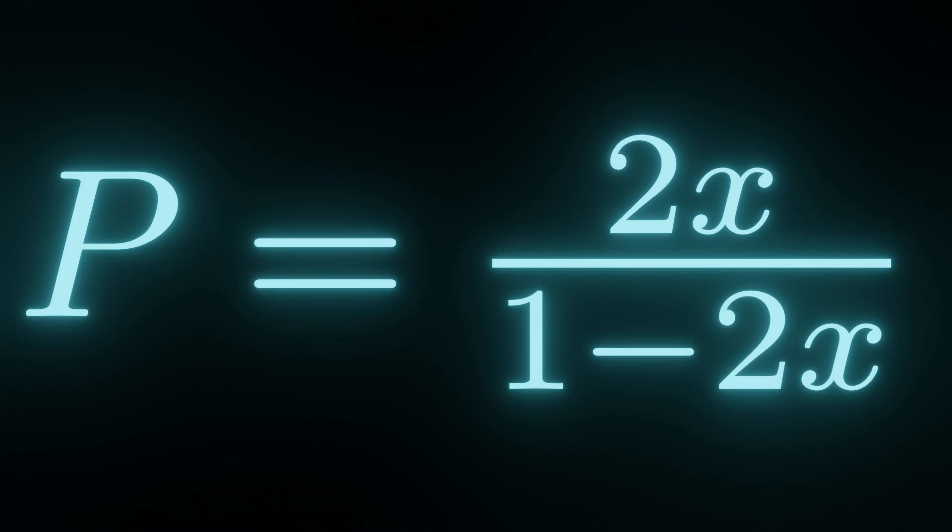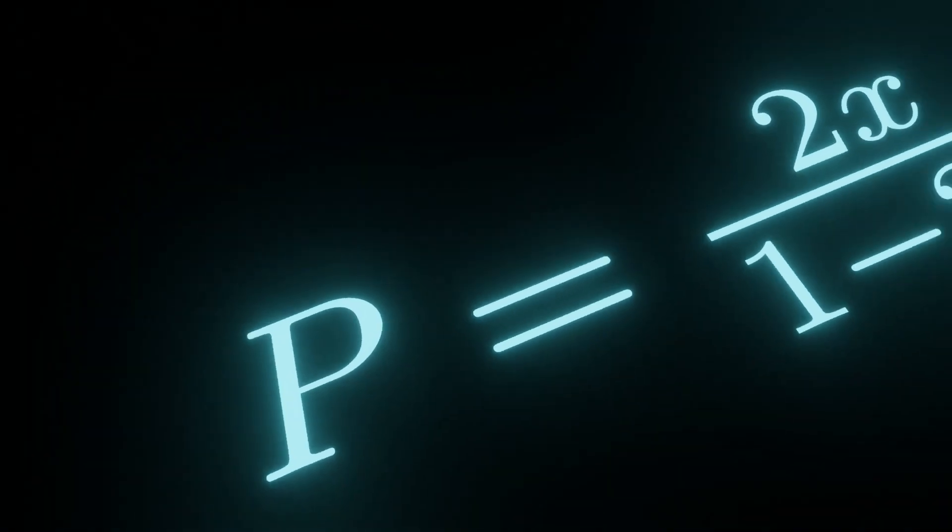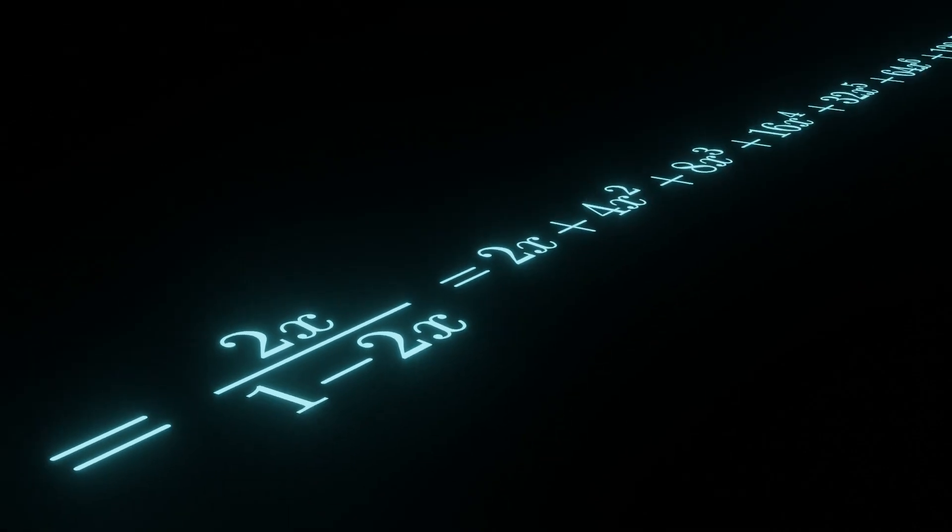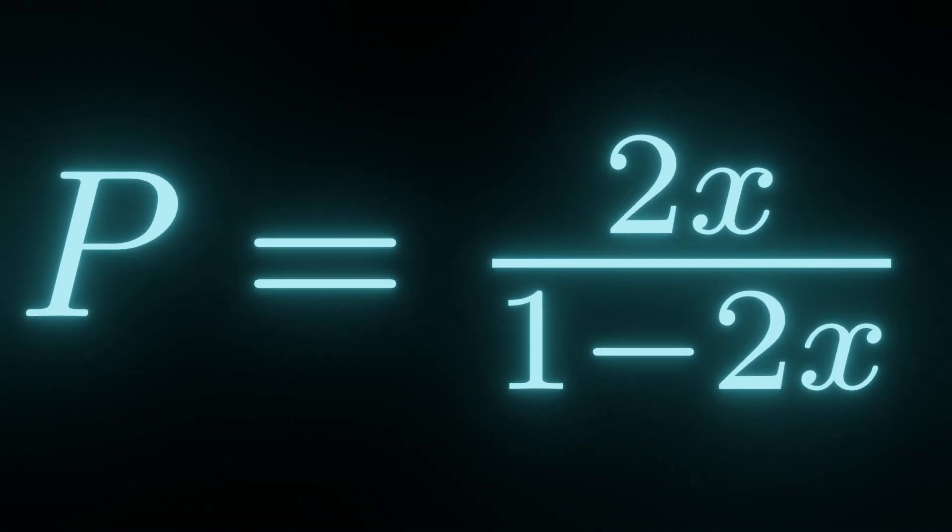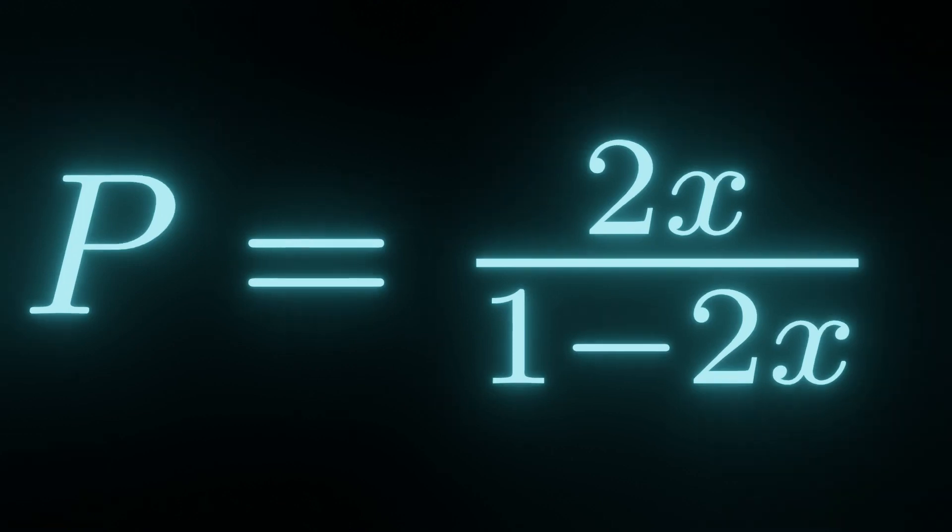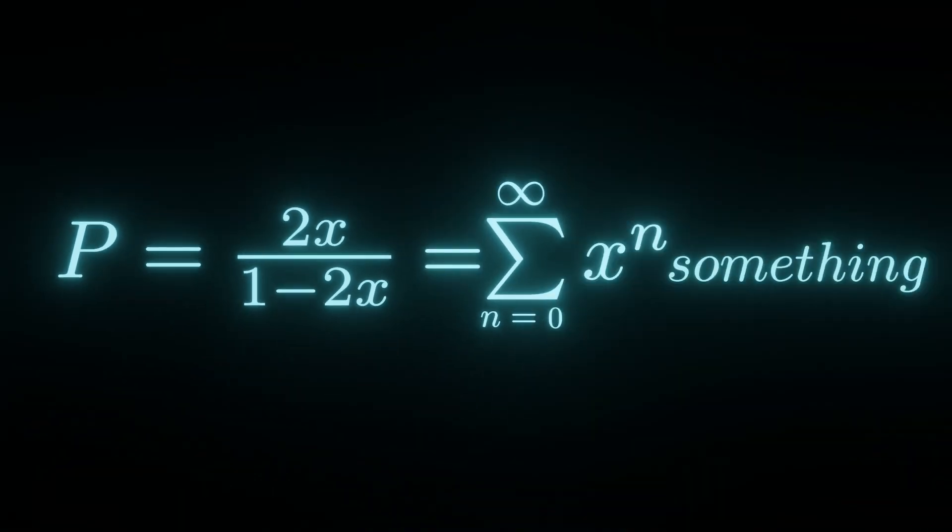Suppose we don't know how to get the nth power of 2. We already have a way to generate terms of this series, by using the power series expansion. We need a way to extract just the coefficients. We need to find a way to write this in the form of x to the n times something.